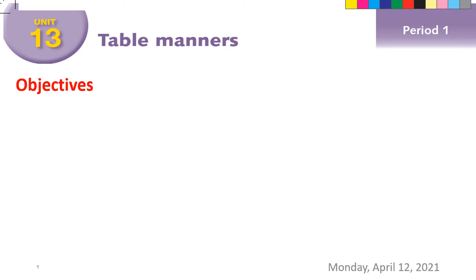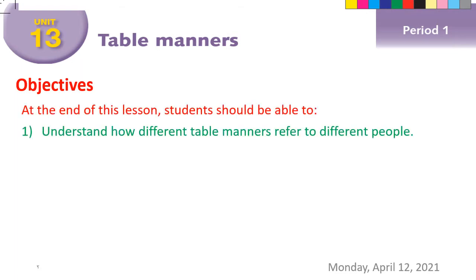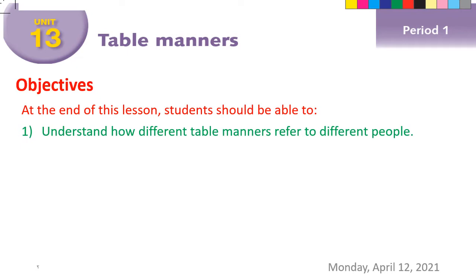Today we're talking about the rules of food, because the rules of food are different from country to country, from place to place, from religion to religion. Let's identify our objectives and see what our goals are. The first objective: understand how different table manners refer to different people. Second: use the new vocabulary in a correct context.